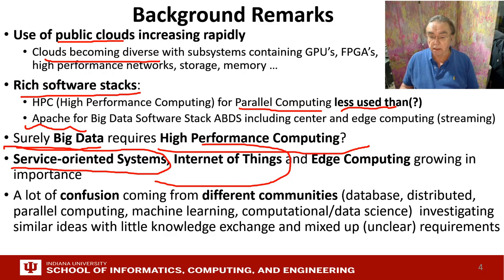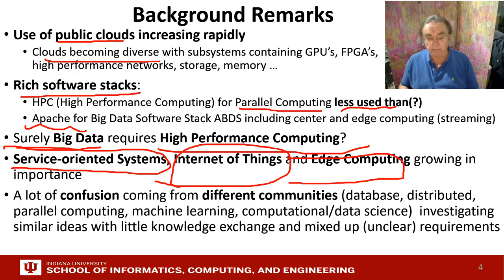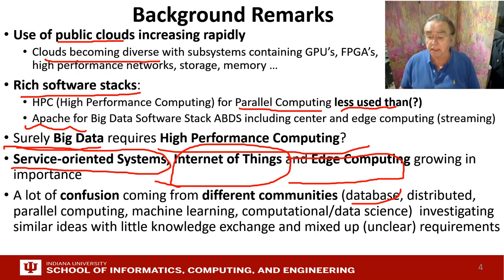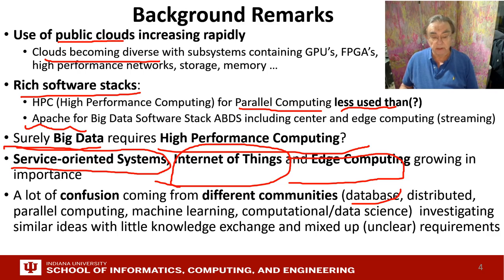We will also have to support the Internet of Things and edge computing, which will actually grow in importance. You will find all communities fighting this out — database, distributed computing, systems people, parallel computing, machine learning, computational science, data science, data engineering — investigating the same or similar ideas. They won't actually talk to each other much because they come from different universities or graduated at different times, since some areas come and go.